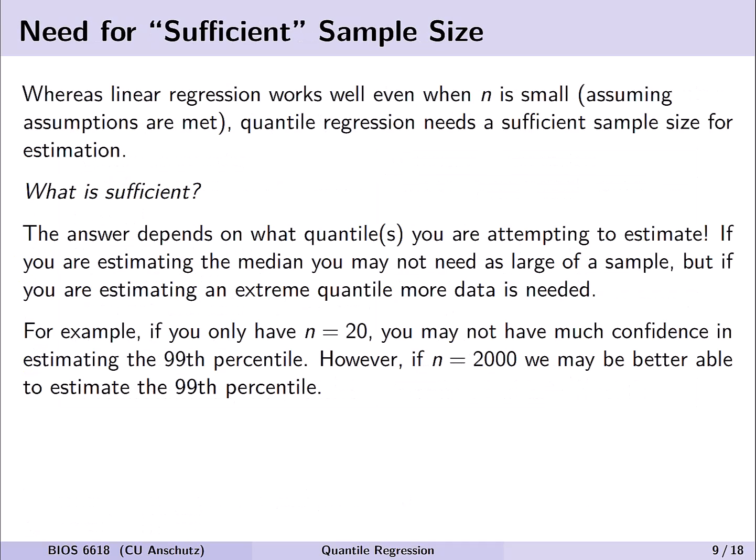So let's break down quickly that need for a sufficient sample size. Whereas linear regression works well even when n is small, assuming our assumptions are met, quantile regression has that assumption of a sufficient sample size for estimation. And so, of course, the natural question is, well, what's sufficient? Well, the answer, of course, in statistics is it depends. It depends here on what quantile or quantiles you're trying to estimate. If you're estimating the median, you might not need as much data because as we think of that, it's really just the 50th percentile, the middle of all of our observations. However, if you're estimating an extreme quantile, more data will be needed. For example, if your sample only has 20 observations, you might not have much confidence in estimating that 99th percentile because you actually don't have a data point really to maybe correspond there. However, if you have 2,000 individuals, you can imagine you'd have multiple observations that you would think of as being in the 99th percentile or just more likely to observe data from the population in your sample that truly meet that assumption.